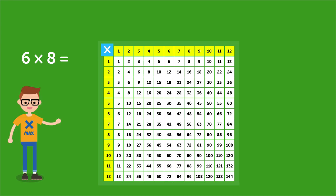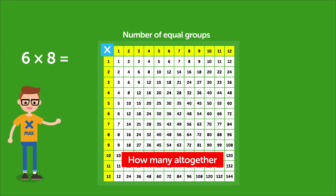OK. Remember the white squares show how many we have all together. The yellow row shows the number of equal groups. And the yellow column shows the size of each group.